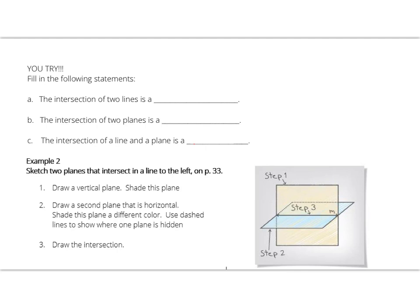For answer A, the intersection of two lines is a point. For answer B, the intersection of two planes is a line. For answer C, the intersection of a line and a plane is a point. These are great examples with no picture, just making sure you understand the vocabulary.